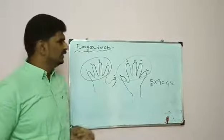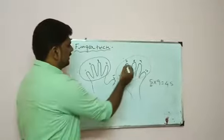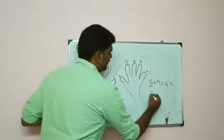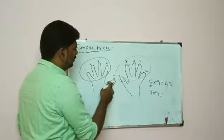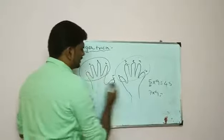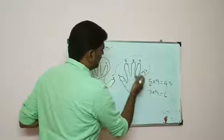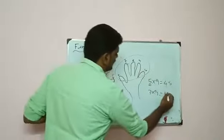7 into 9. Count to 7. How many fingers are there? 1, 2, 3, 4, 5, 6. The 7th finger. How many fingers are there after? 1, 2, 3. 6 and 3.